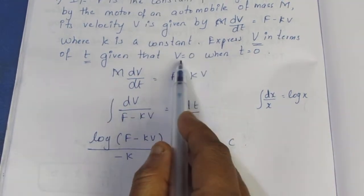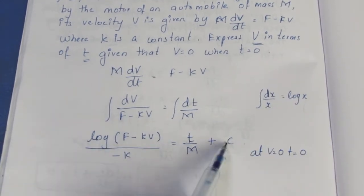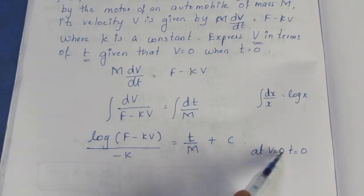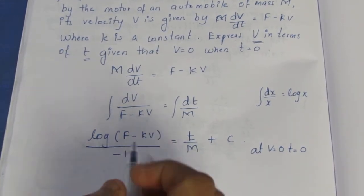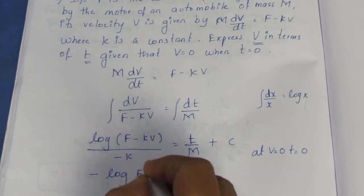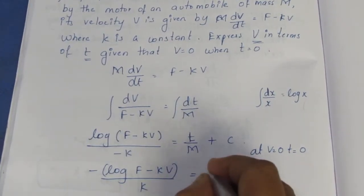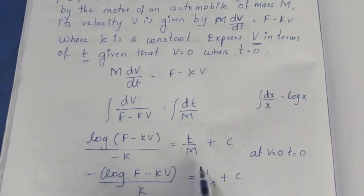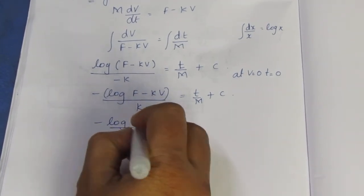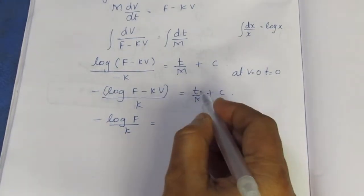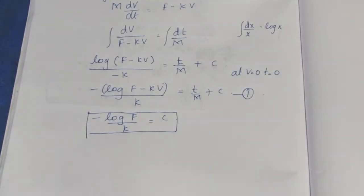Now applying the initial condition V equal to 0 and T equal to 0. We substitute these values to find the constant C. So we get minus log(F) by K equal to 0 plus C. Therefore, C value is minus log(F) by K.